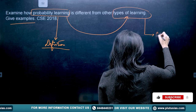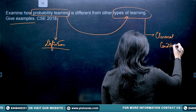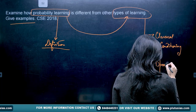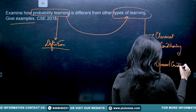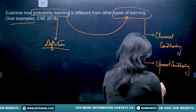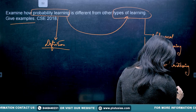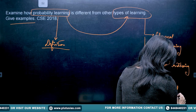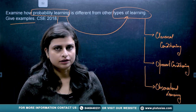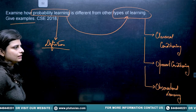So here we have to write the definition of probability learning, and then explain how it is different from other types of learning. The other types of learning we will focus on are: first, classical conditioning; second, operant conditioning; and third, observational learning. Once you know these are the other types of learning being focused on, you explain probability learning.